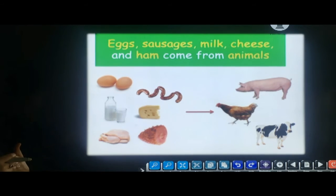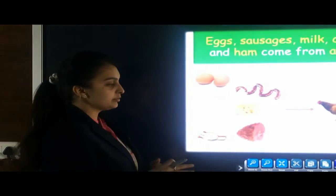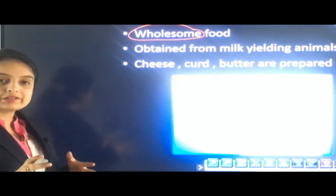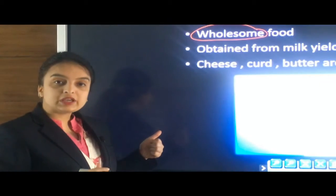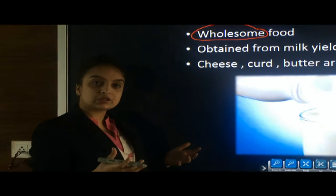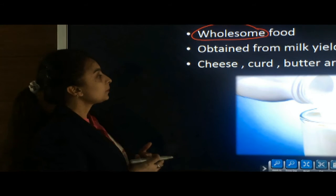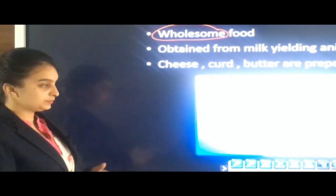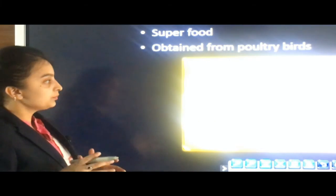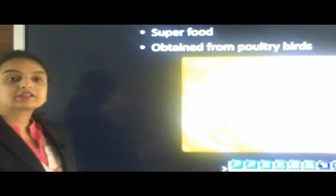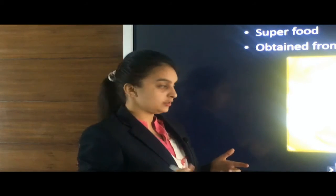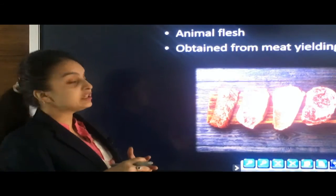Animals are also considered a source of food. Firstly, milk is itself considered a wholesome food — meaning it is a complete food in itself. Milk is obtained from milk-yielding animals such as cows, goats, and camels. Food items such as cheese, curd, and butter are also prepared from milk. The next food item we get from animals is egg, which is considered a super food and is obtained from poultry birds such as hen, duck, and turkeys.